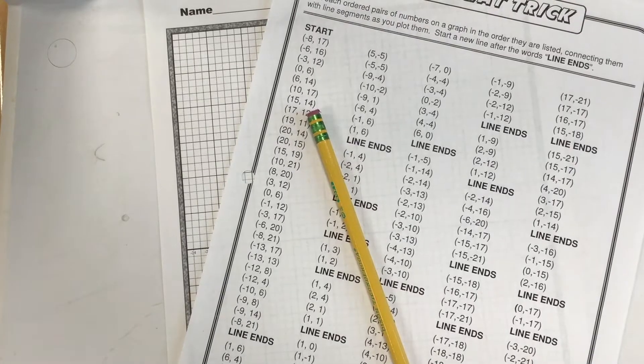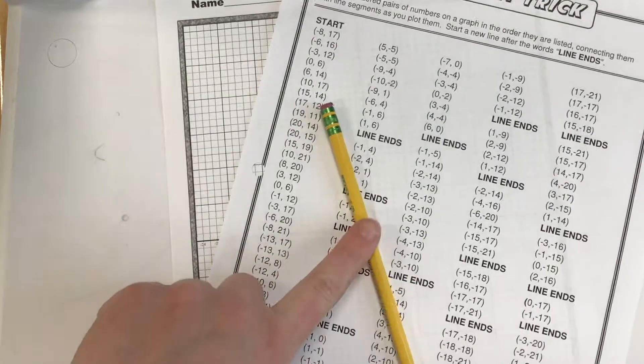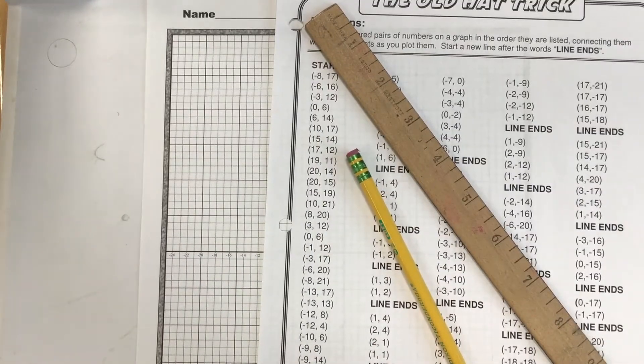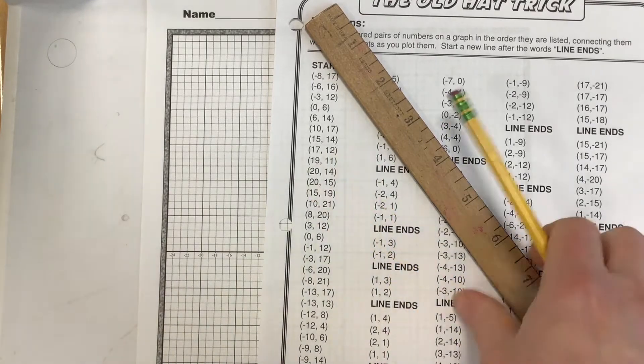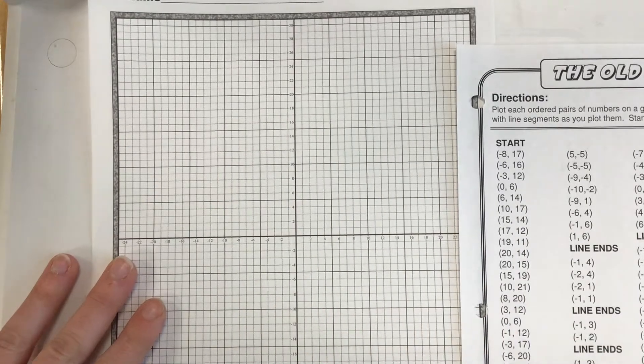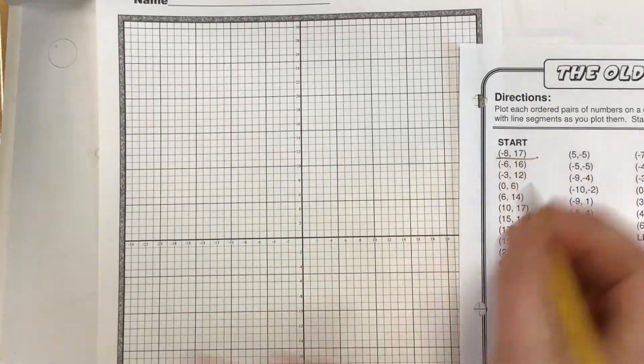So just like the other graphing puzzle, what you're going to need is a pencil, a ruler, and it really helps to print out the directions so you can cross them off as you do them. Like I said, these are four quadrant graphs, so pay really close attention to whether it's negative or positive.